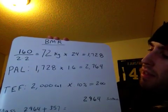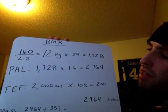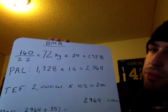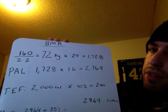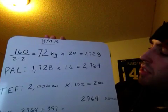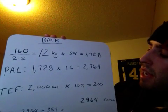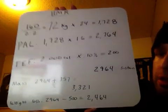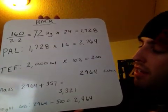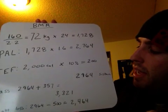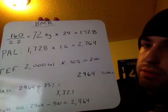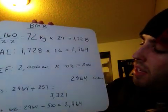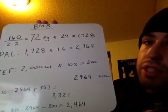Okay, the fourth step there is you're going to take the PAL number and the TEF number. So 2,764, add that to the 200. That equals 2,964 calories to sustain your weight. Okay, so that's to sustain the weight that you're at.